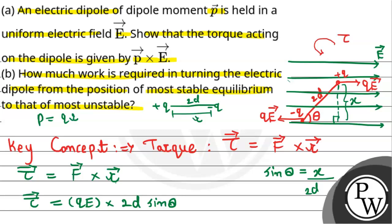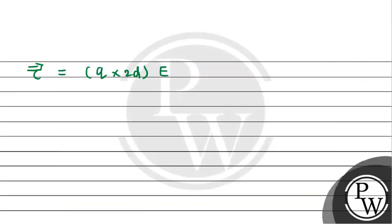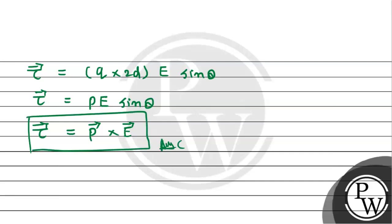From the formula of dipole, charge times the distance between the two charges, we get the couple equals q times 2d times E sine theta. Since q times 2d is the dipole moment p, this becomes p times E sine theta. Since p sine theta indicates vector notation, we get the required couple as p cross E vector. This is what we have to prove, and hence we have proved part A of this question.